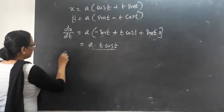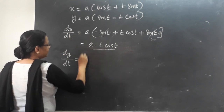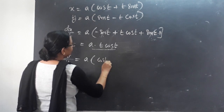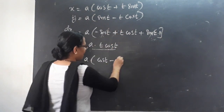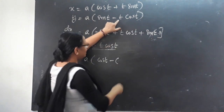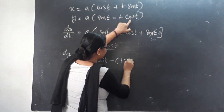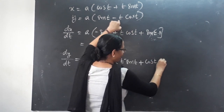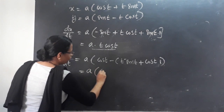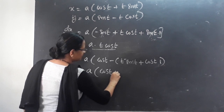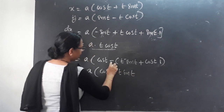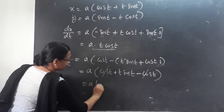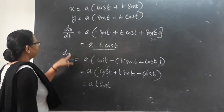Now, what do we call dy by dt? With respect to t, a is a constant. We differentiate sin t — cos t minus. We apply the product rule. t and cos t are two functions: first function, second function. Cos t minus sin t plus cos t into 1. This gives a into cos t, minus of minus, plus t sin t, minus cos t. So dy by dt equals a into t sin t.